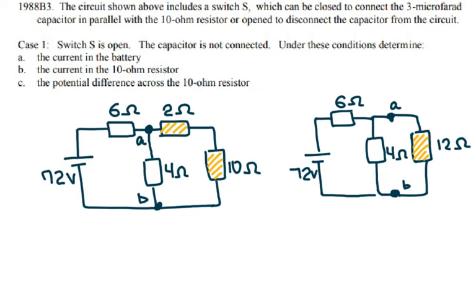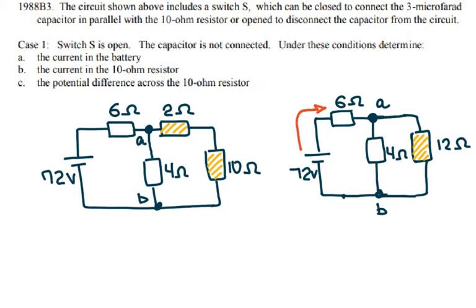The maximum current leaves the battery and when it reaches point A it has to split into two currents — one through the 4 ohm resistor and one through the 12 ohm equivalent resistor. Any point on the wire can be called point A or point B. Since the current splits at point A, some voltage drops on the first 6 ohm resistor, but the voltage across A-B is the same for both the 4 and 12 ohm branches.